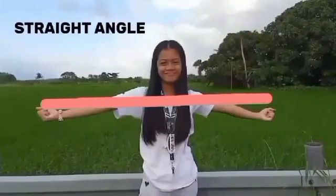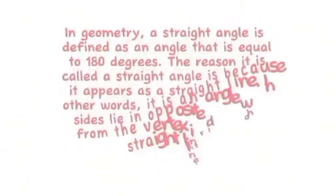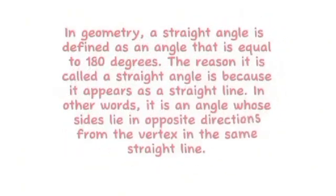Straight angle. In geometry, a straight angle is defined as an angle that is equal to 180 degrees. The reason it is called a straight angle is because it appears as a straight line. In other words, it is an angle whose sides lie in opposite directions from the vertex in the same straight line.